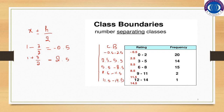These are the class limits — lower class limit and upper class limit. This is the lower class boundary and this is the upper class boundary. As you can see, the gap is now filled. Where before we had 2 and then 3, now we have 2.5 and 2.5, and 5.5 and 5.5 — the gap between classes is eliminated.